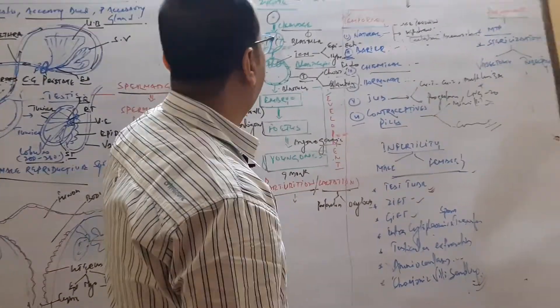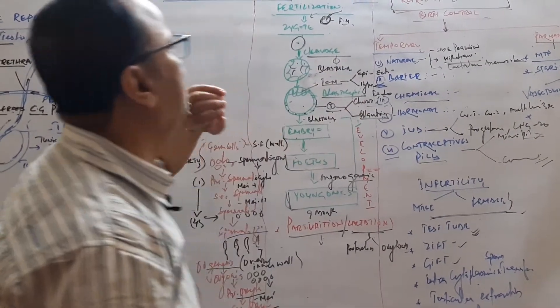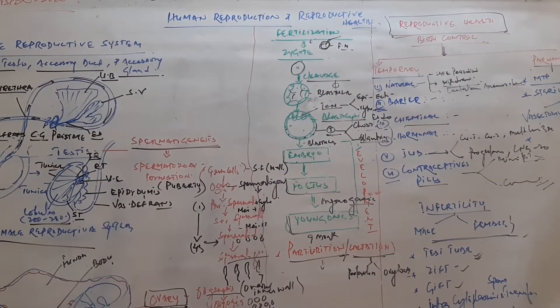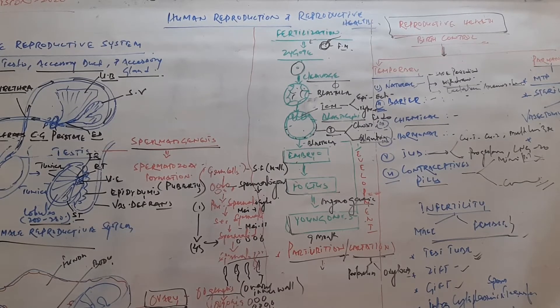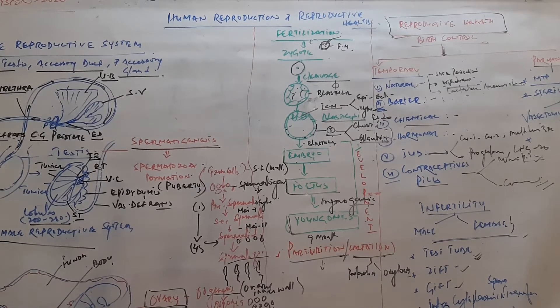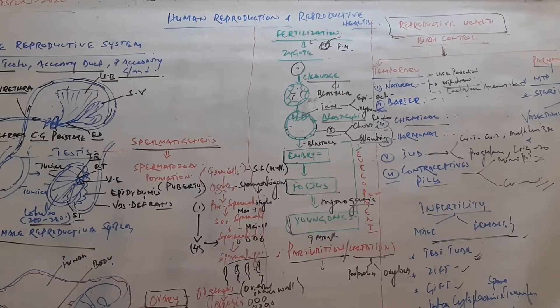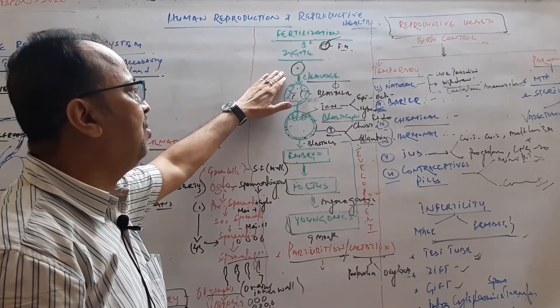With the fusion of two opposite gametes, fertilization occurs to produce a zygote. It is a diploid structure. Before that, the fertilization mechanism occurs where the male gamete meets the female gamete or egg. First is the acrosomal reaction and anti-fertilization reaction occurs. The membrane is called sperm lysin, which penetrates the sperm. Then formation of the fertilization membrane by dissolution of cortical granules occurs.